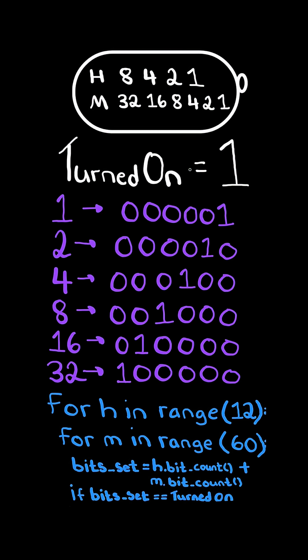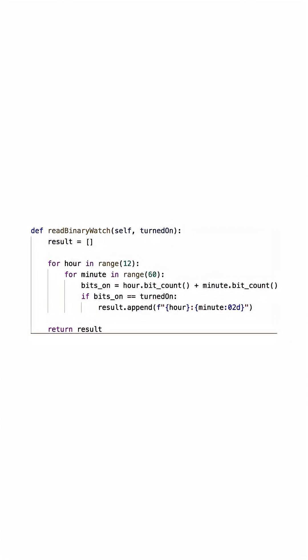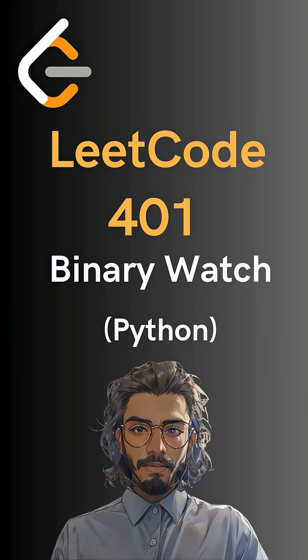If the total number of bits set equals turned on, we can produce that specific time with the given number of LEDs, so we add it to the result. And here's the code to do so. Please like and follow for more.